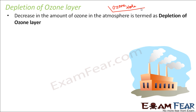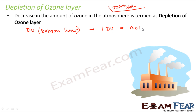How do we get to know that the ozone layer is depleting? The thickness of the ozone layer is measured in terms of a unit called Dobson units. One Dobson unit is equal to 0.01 mm at standard temperature and pressure. As the thickness reduces, we get to know that the amount of ozone is reducing.